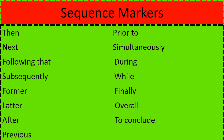Here are some sequence markers — many students keep writing 'then, then, then' or 'next, next, next' after each sentence, so here are better alternatives: following that, subsequently, former, later, after, previous, prior to, simultaneously (meaning at the same time), during, while. And before the final sentence you can use: finally, overall.